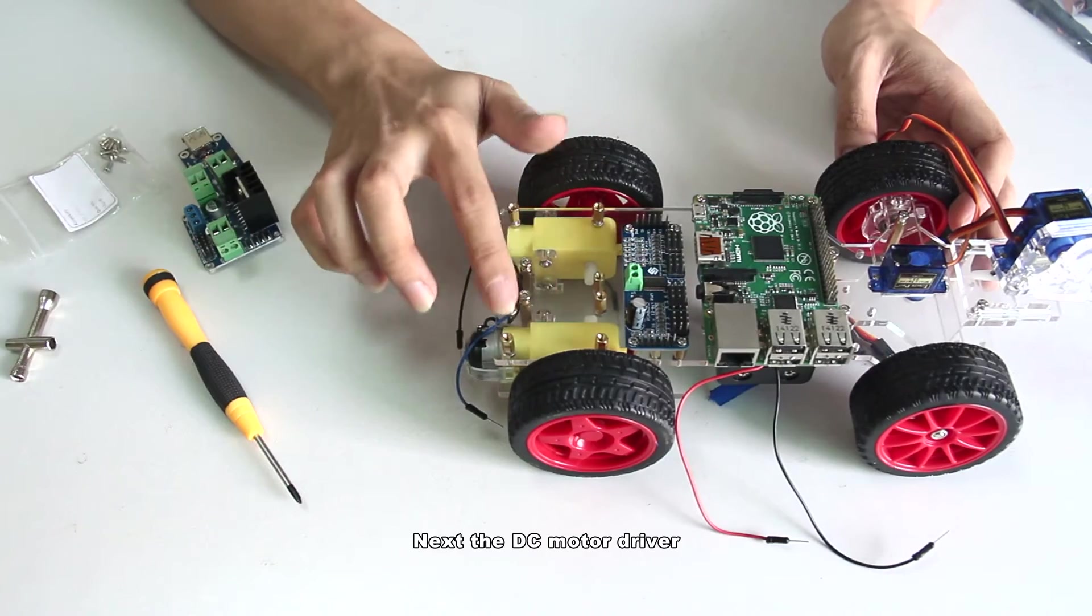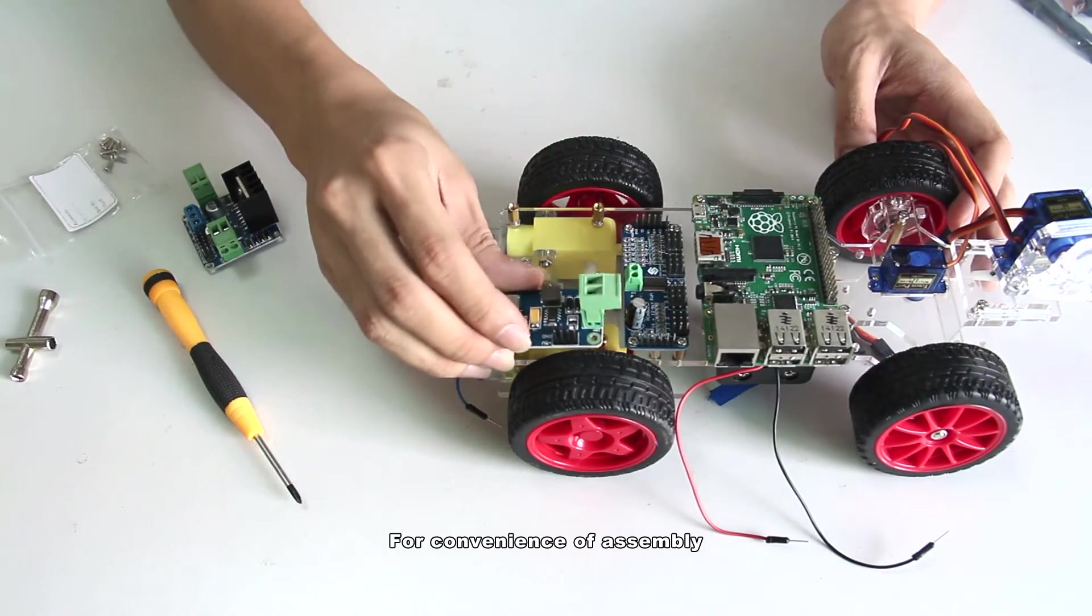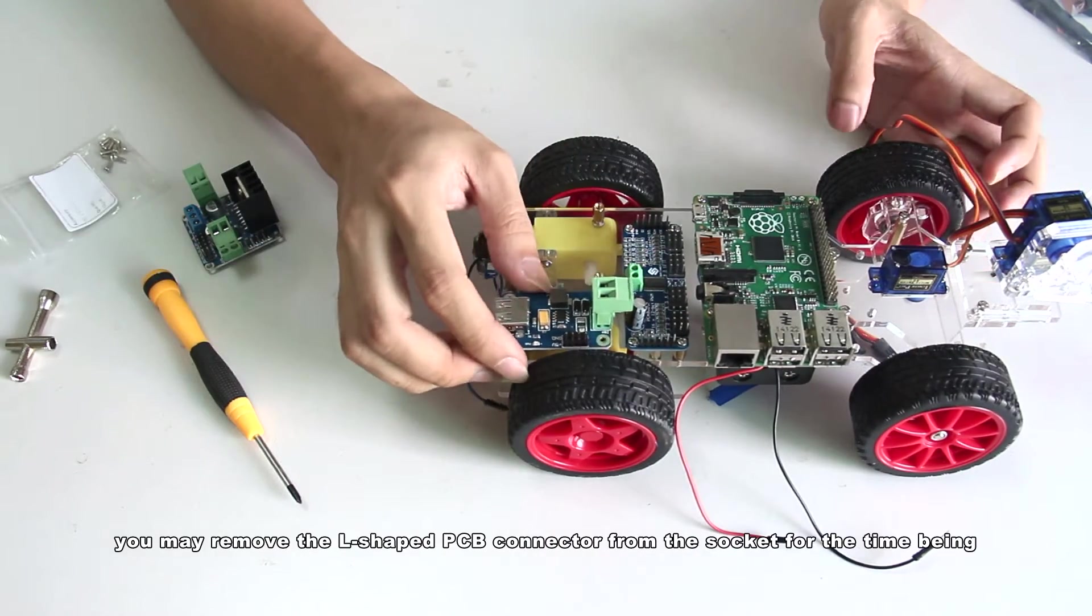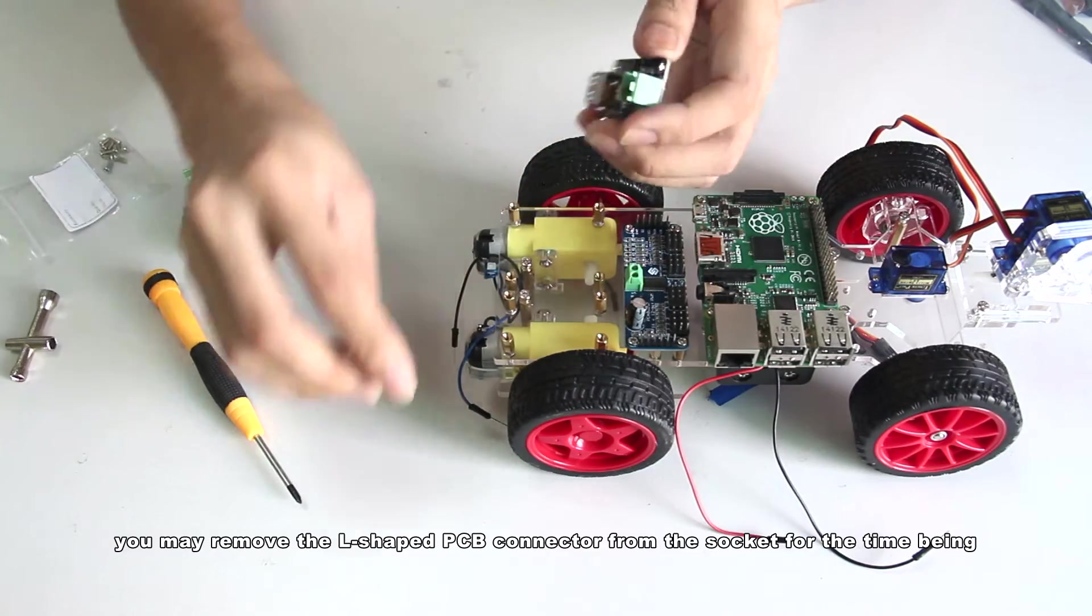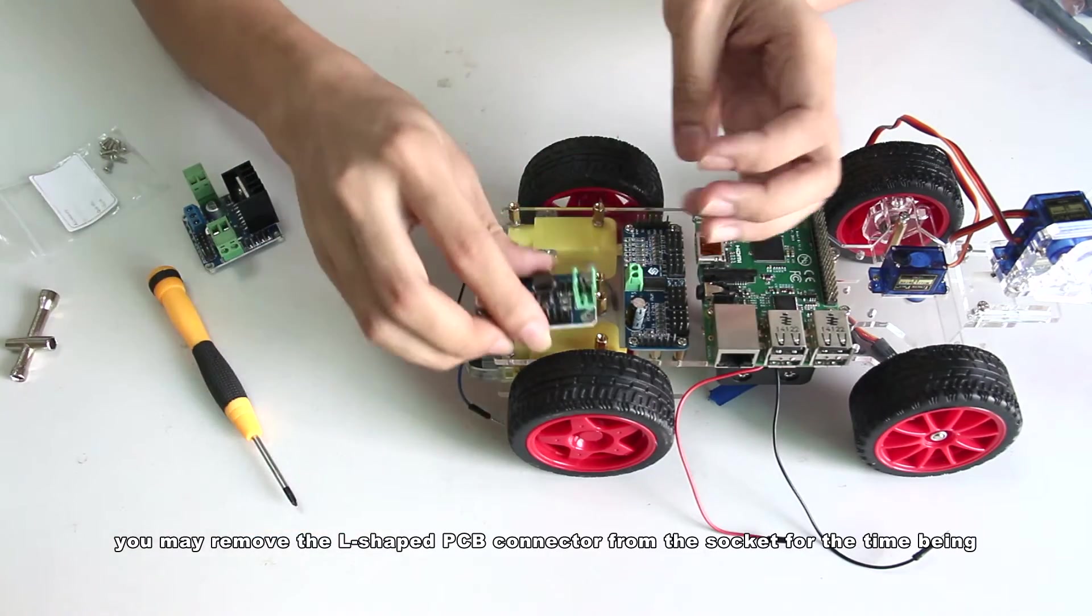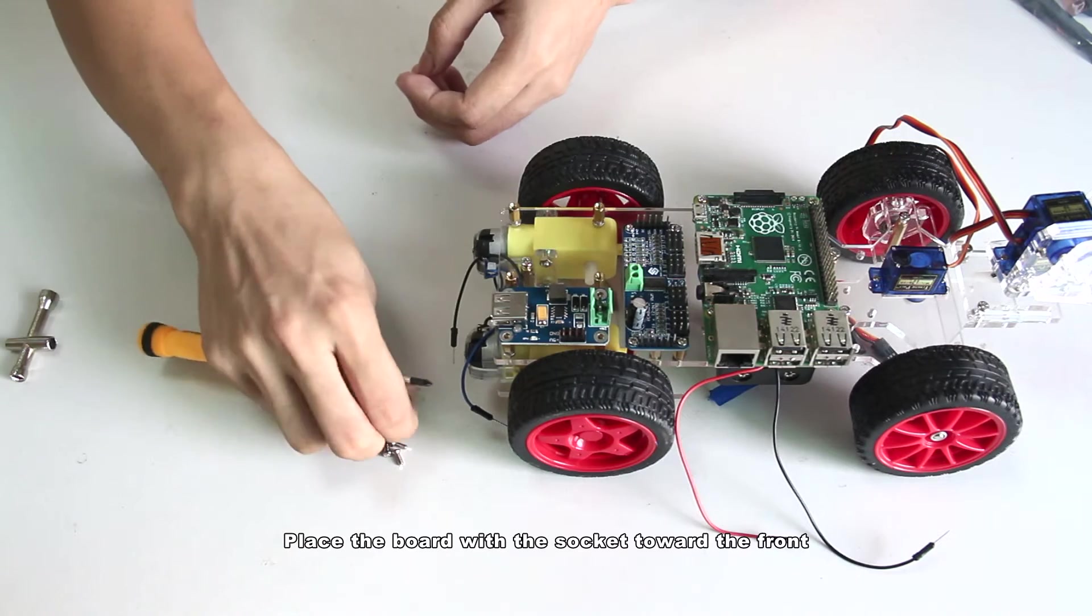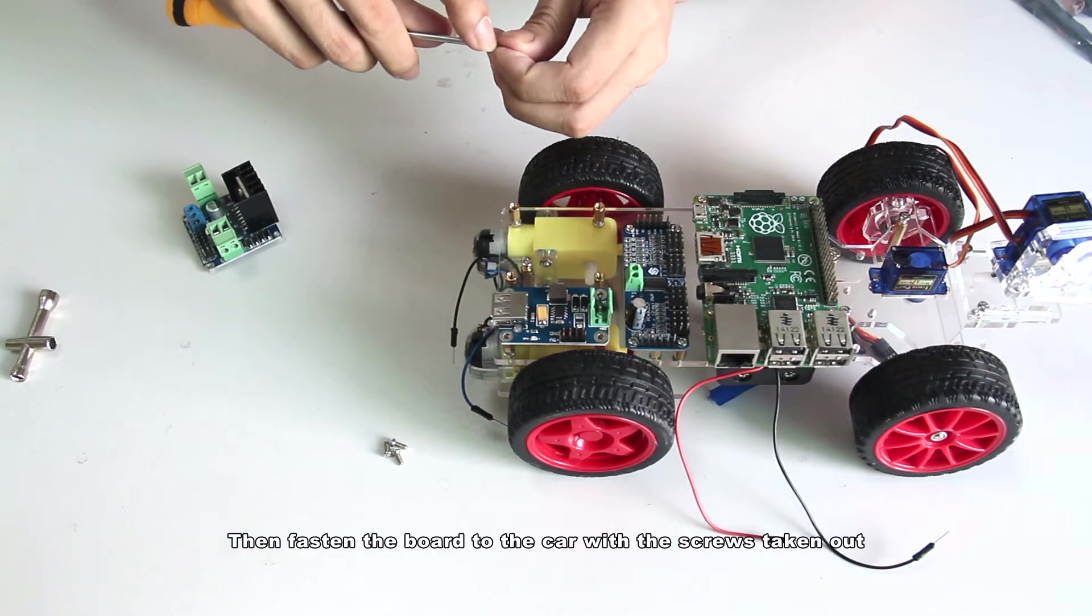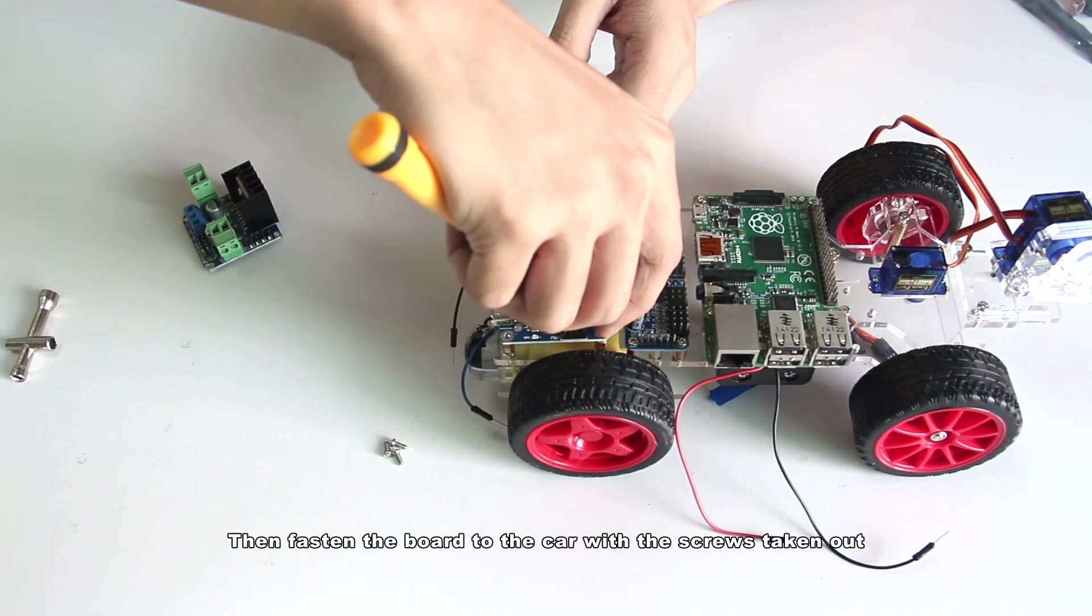Next the DC motor driver. For the convenience of assembly, you may remove the L-shaped PCB connector from the socket for the time being. Place the socket base toward the front. Then fasten the board to the car with the screws.